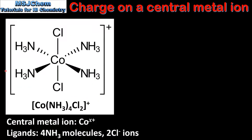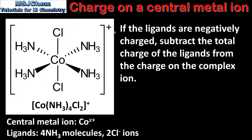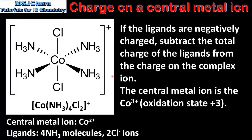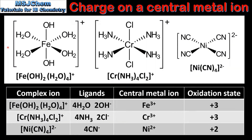In our next example the central metal ion is cobalt, and the ligands are 4 ammonia molecules and 2 chloride ions. The charge on the complex ion is 1+. If the ligands are negatively charged we need to subtract the total charge of the ligands from the charge of the complex ion. The 2 chloride ions give a total ligand charge of 2-. Subtracting this from the complex ion charge, we can determine that the central metal ion is the cobalt 3+ ion, which has an oxidation state of +3.